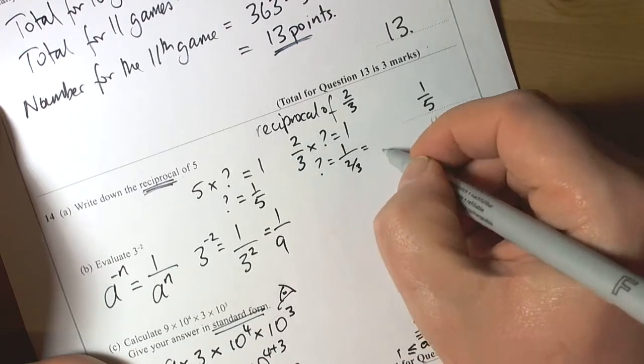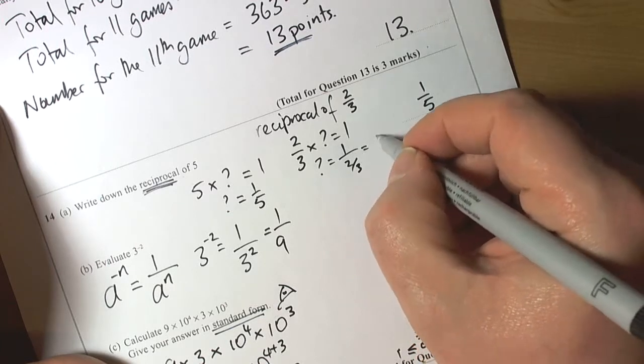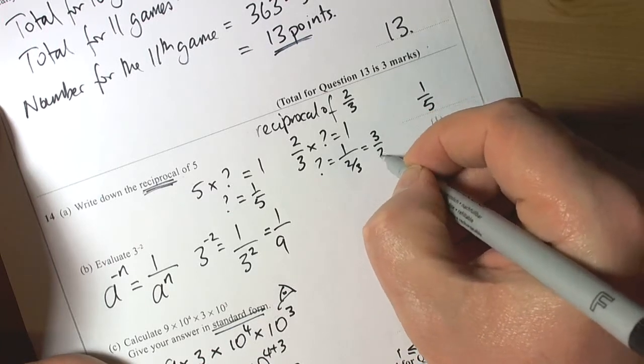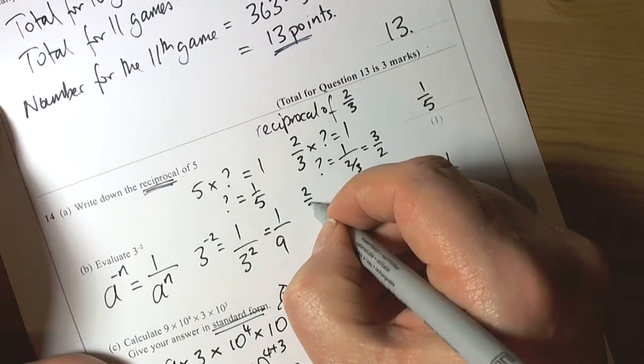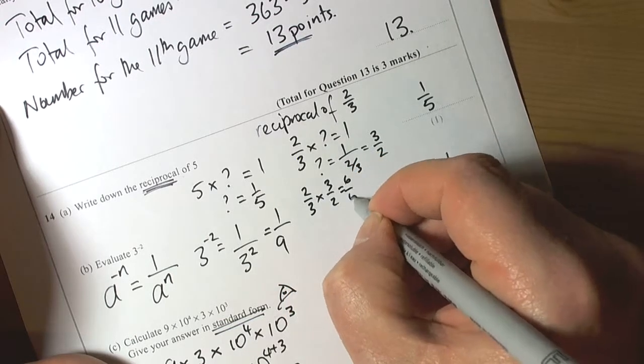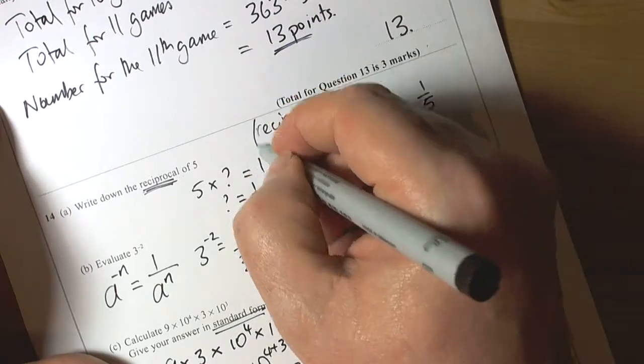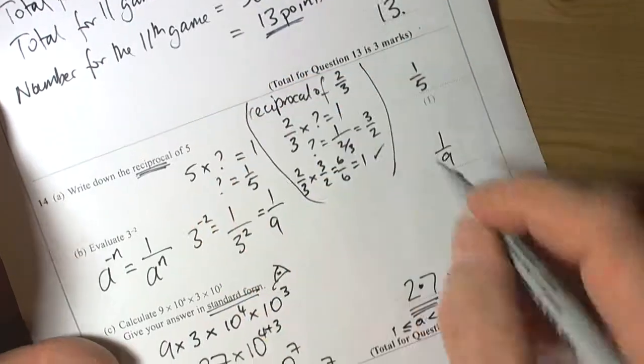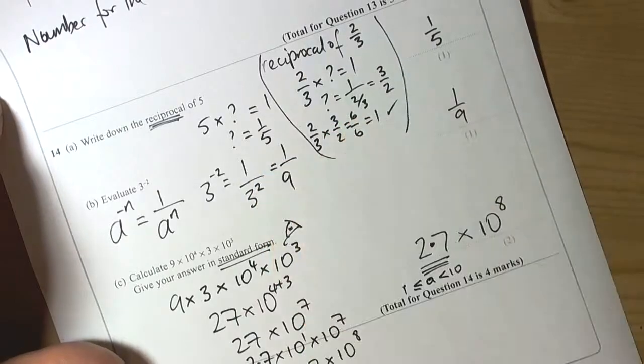One divided by two-thirds is the same as multiplying by three over two, so one times that will be three over two. That works because two over three times three over two is six over six, which is one. Just another example of using the word reciprocal.